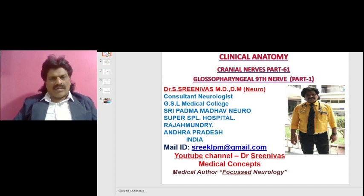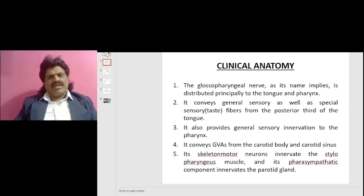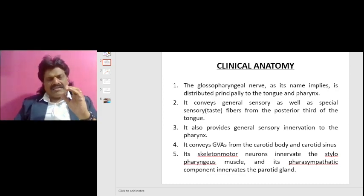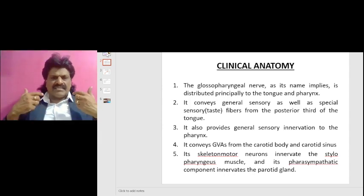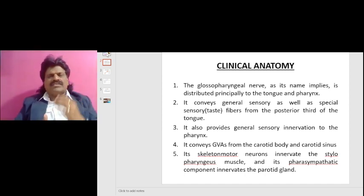The clinical anatomy of the glossopharyngeal nerve — the ninth nerve. The glossopharyngeal nerve, as its name implies, is distributed principally to the tongue and the pharynx. It conveys general sensory as well as special sensory taste fibers from the posterior third of the tongue.